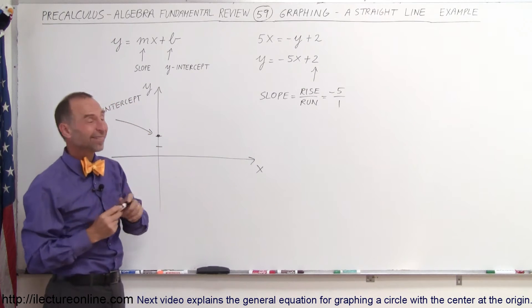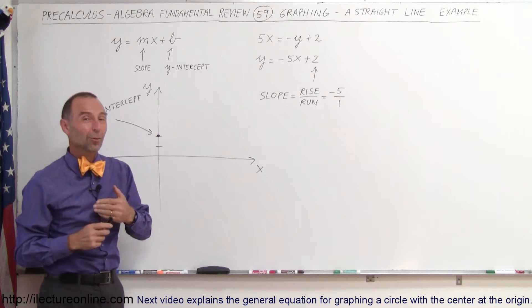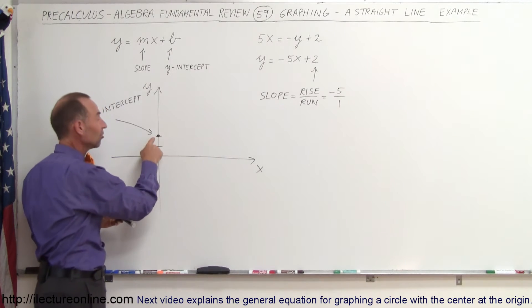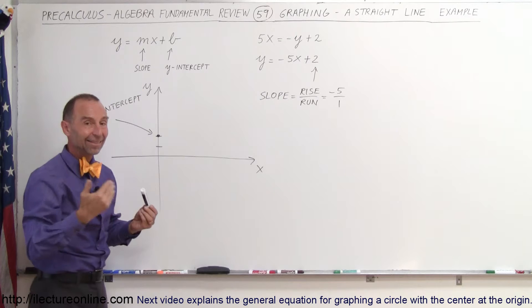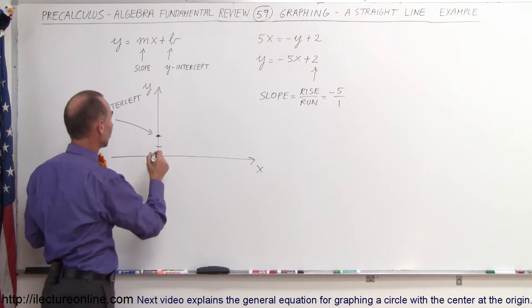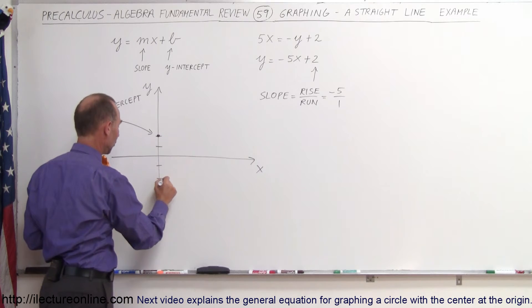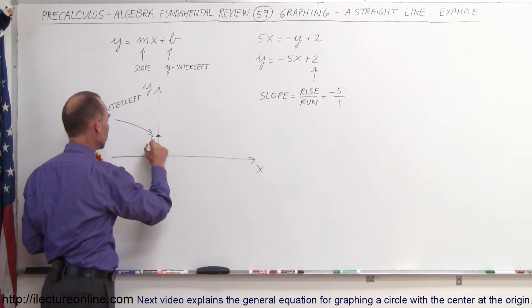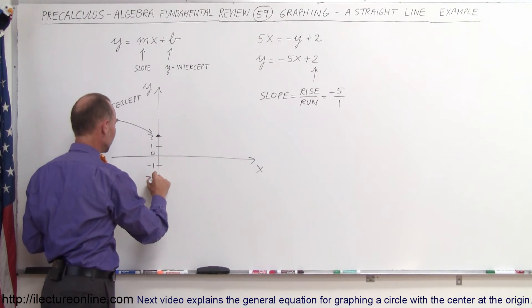Now notice, the rise is a negative number, which means instead of rising, it's actually falling. So starting from the intercept, we fall, that's the negative rise, 5 units. So 1, 2, 3, 4, 5, that would be 2, 1, 0, negative 1, negative 2, negative 3.